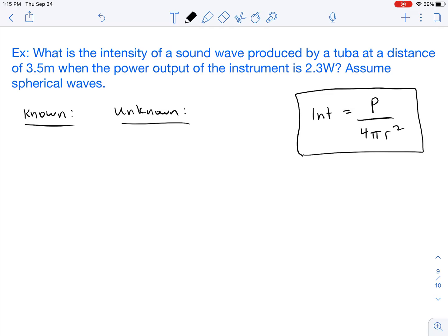The first thing that we're going to do is begin by listing our knowns and unknowns based on the problem. So we have a distance here of 3.5 meters. We're going to list that as our radius.